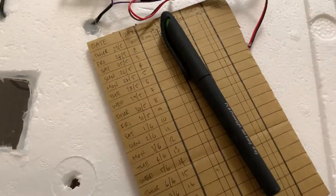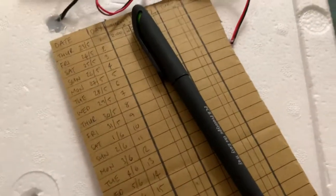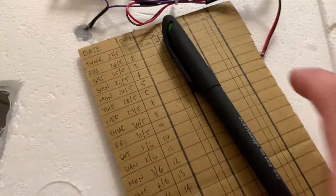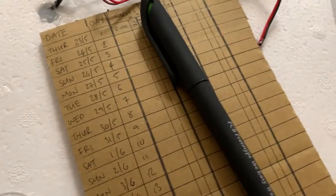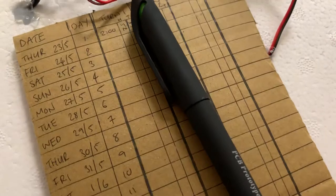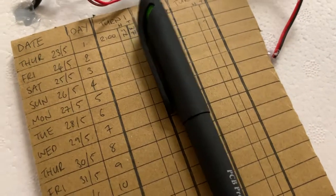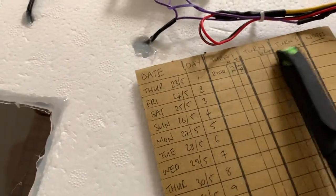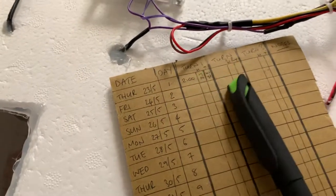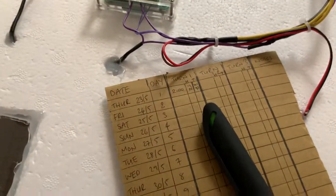I've got a little bit of card here that I'm keeping note of what day it is. Today is the 23rd of May and the eggs have gone in at about two o'clock. This is to write down the time I've turned them every day because I need to turn them at least three times a day.